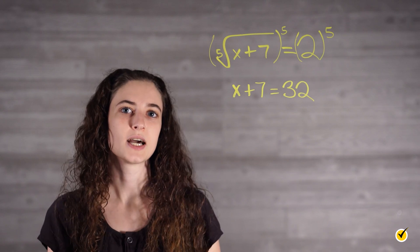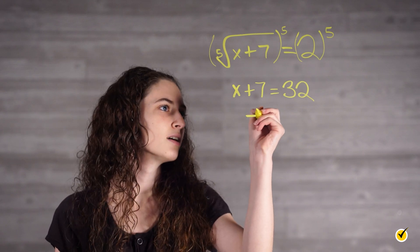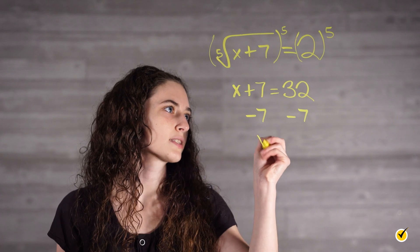Subtracting 7 from both sides gives us our final answer, which is x equals 25.